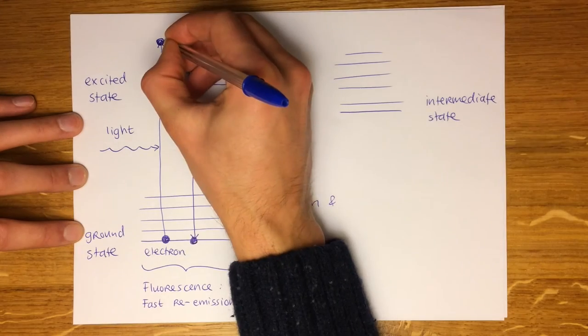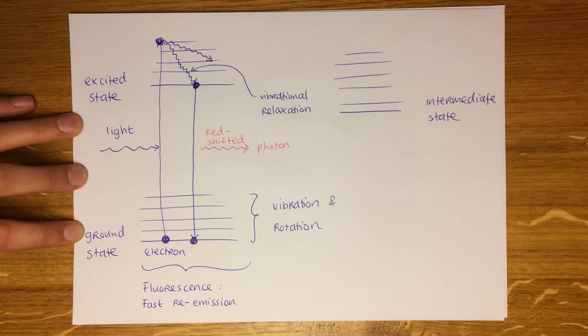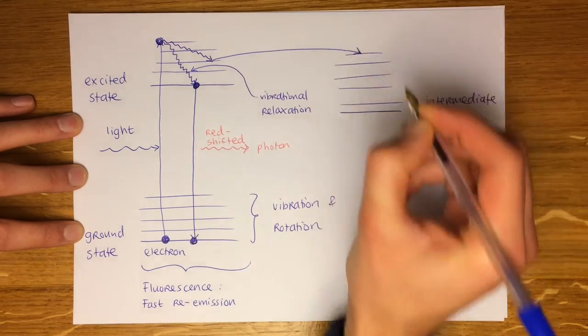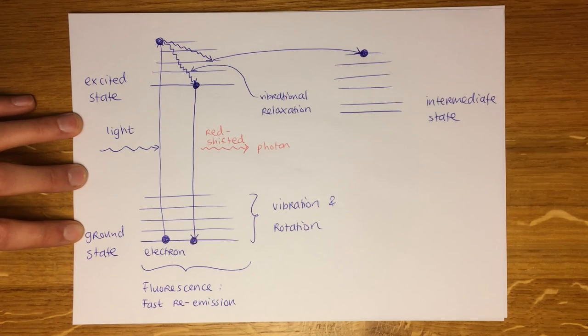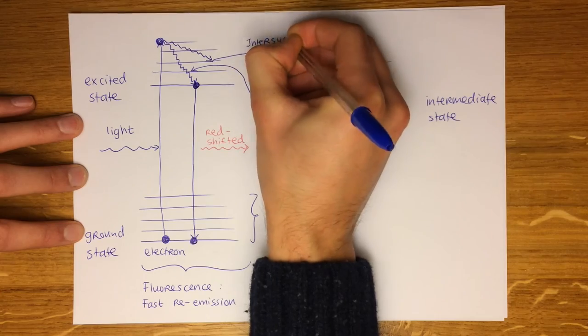The other route also involves thermal relaxation. However the electron then transitions to another state with overlapping energy levels. This is called inter-system crossing.